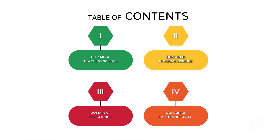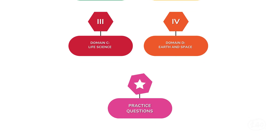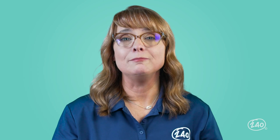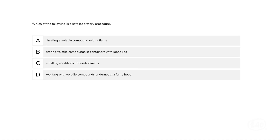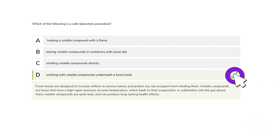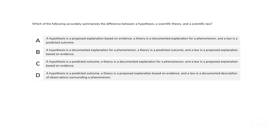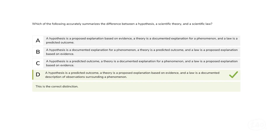Now that we've gone over some of the big concepts, let's look at some practice questions to show you how those concepts can appear on the test. Starting back in the teaching science domain — first up, lab safety. Which of the following is a safe laboratory procedure? Many volatile compounds are quite toxic and can produce long-lasting health effects. Fume hoods are designed to increase airflow and remove fumes and protect any lab occupant from inhaling them — so that is the best answer.